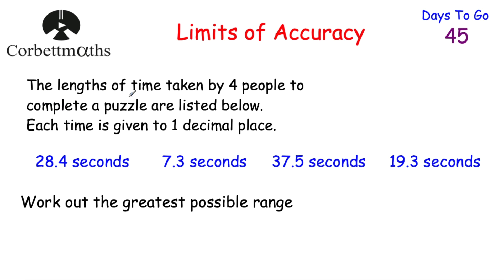The first question says: the lengths of time taken by four people to complete a puzzle are listed below. The four times are 28.4 seconds, 7.3 seconds, 37.5 seconds, and 10.3 seconds. Each of these times has been rounded to one decimal place. The question asks: work out the greatest possible range. Feel free to press pause now to try this question yourself.